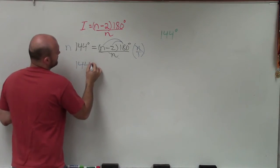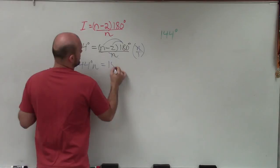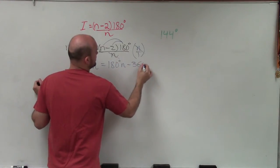When I do that, I obtain 144 degrees n equals 180 degrees n minus 360 degrees.